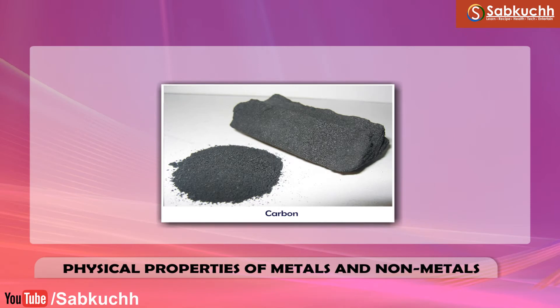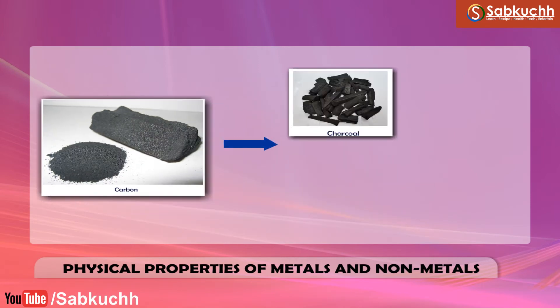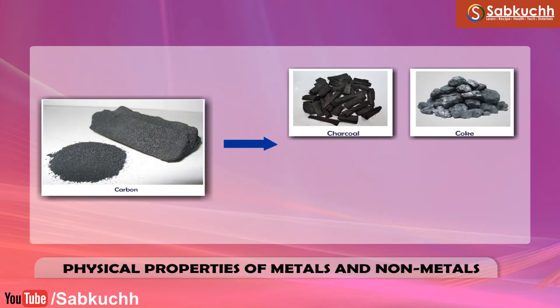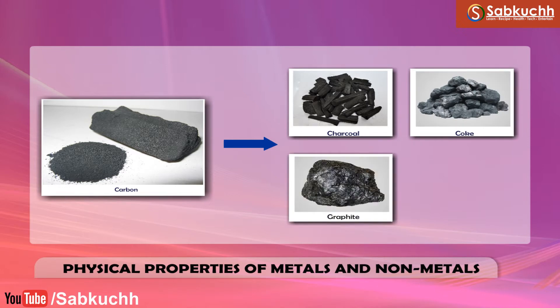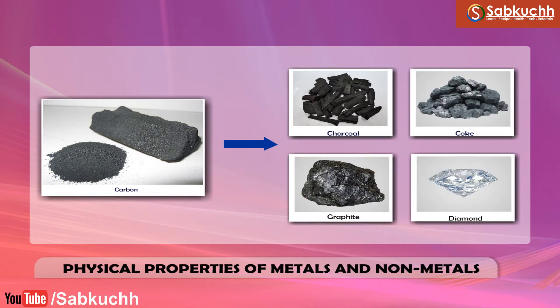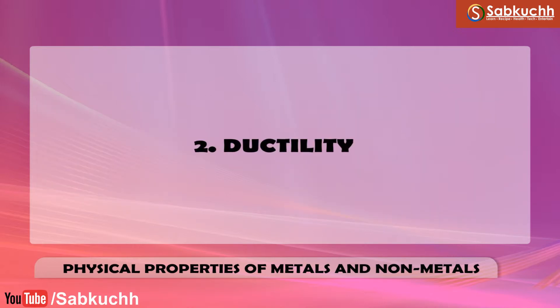Carbon is a non-metal. Carbon is found in many forms such as charcoal, coke, graphite and diamond. The property due to which non-metals break on hammering is called brittleness. Brittleness is a characteristic property of solid non-metals.